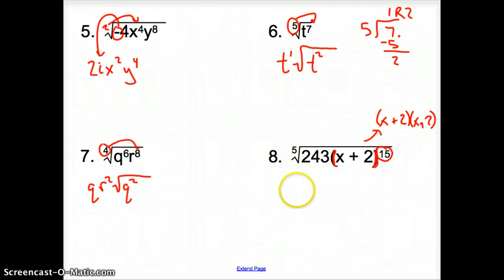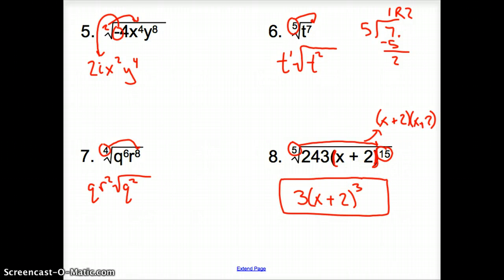you pop it into your calculator. You come up with 3. Now this 5, we want to divide into that 15. So it divides in there evenly, and it's going to be x plus 2 because that's what the 15 belongs to. How many times does the 5 go into the 15? Three times for your final answer of 3 times the quantity x plus 2, that quantity to the 3rd power.